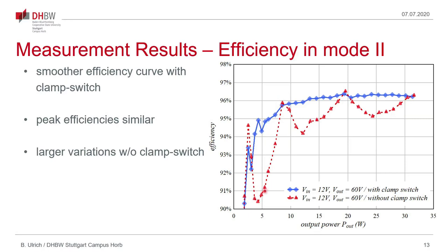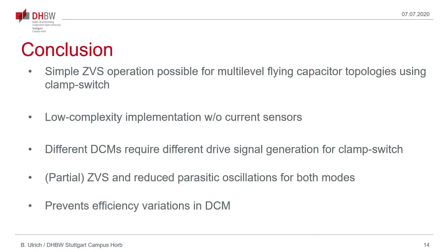In conclusion we can see that a simple ZVS operation is also possible for a multilevel flying capacitor converter when using a clamp switch. This allows for a very low complexity implementation of the ZVS without any current sensors as we can derive the required driving signals for the clamp switch from the main drive signals. But we have to do this in the different discontinuous conduction modes in different ways. At least partial ZVS can be achieved and we can reduce parasitic oscillations in all modes. And we can prevent efficiency variations which would otherwise occur in a discontinuous conduction mode operated converter.